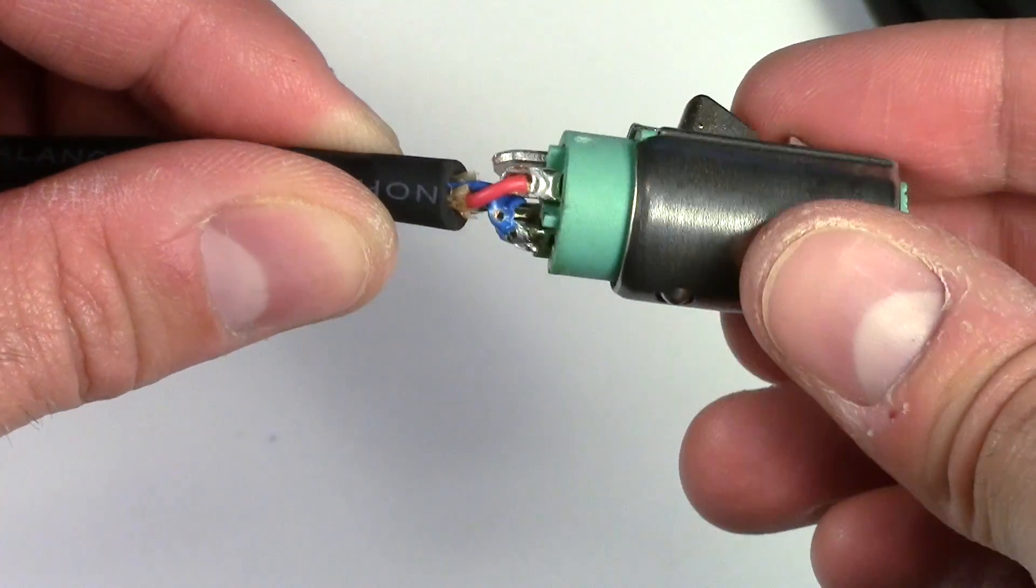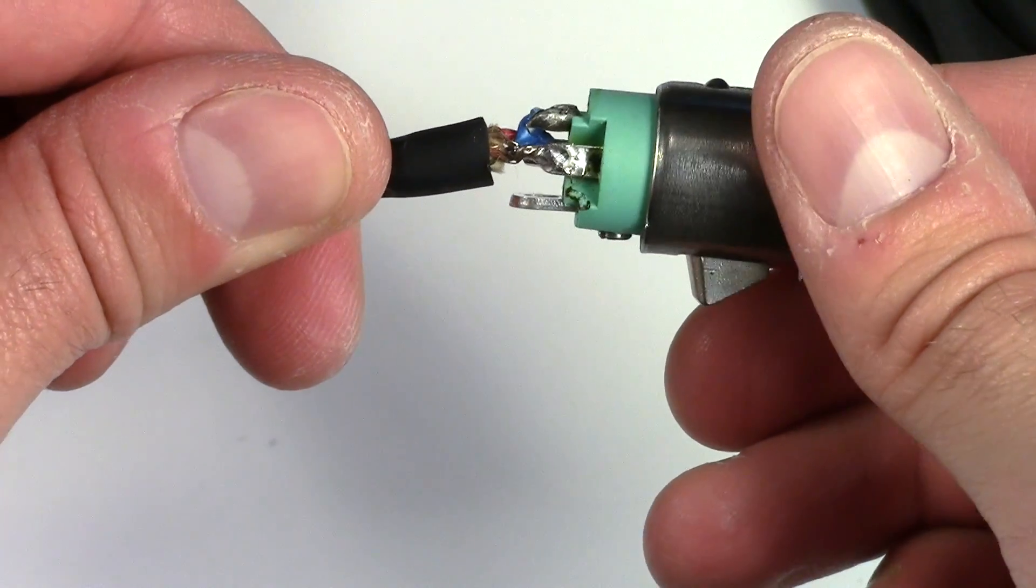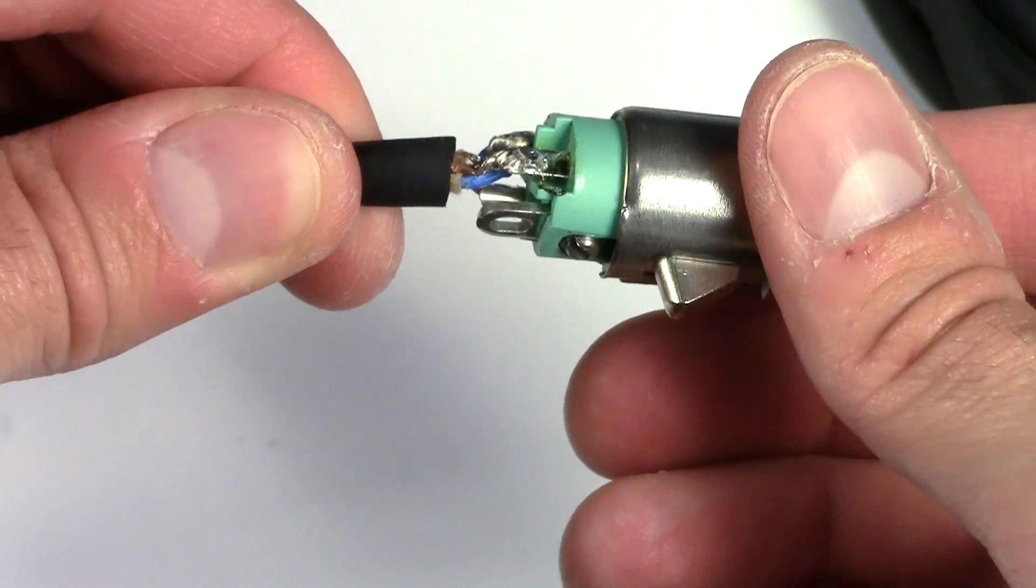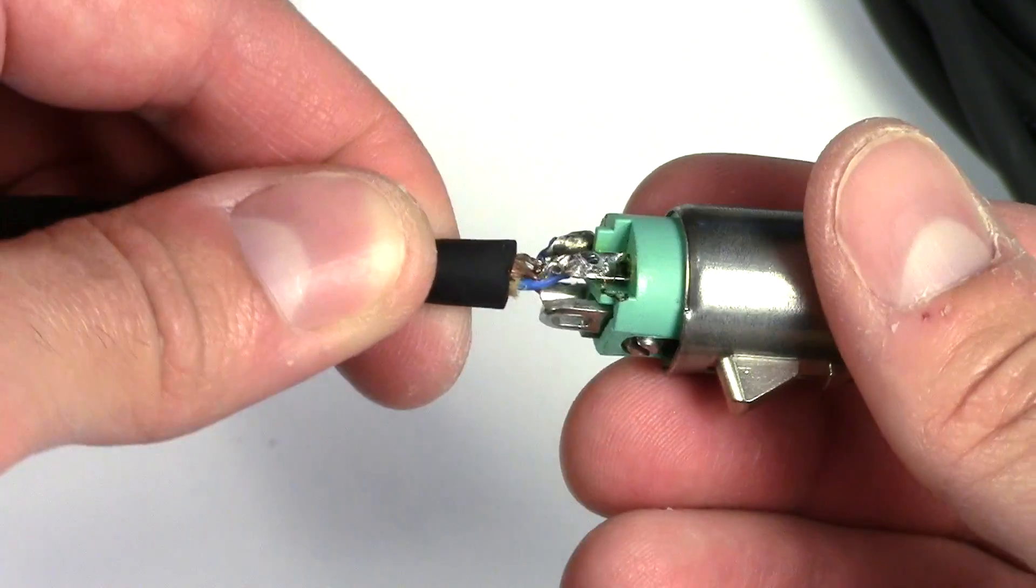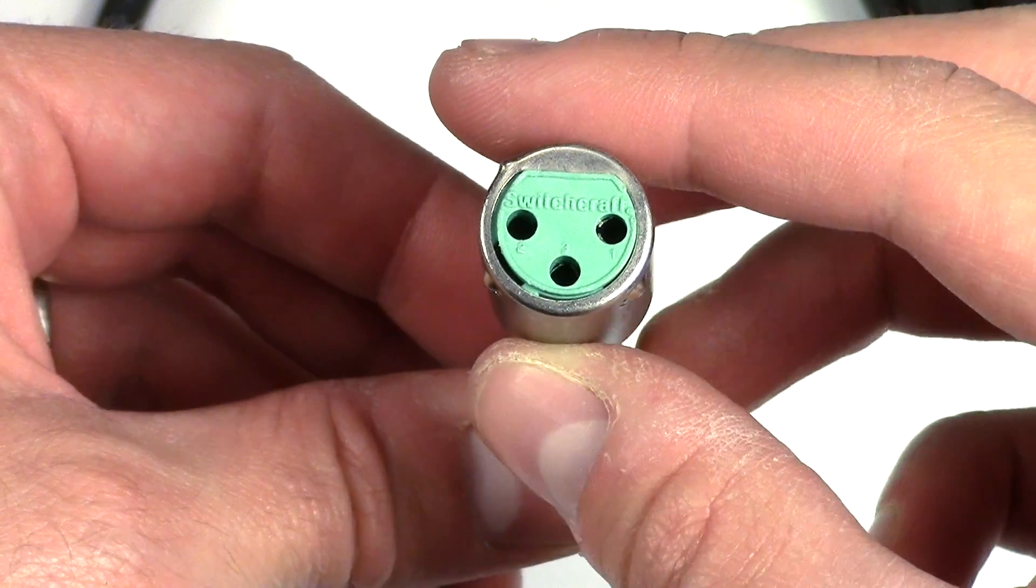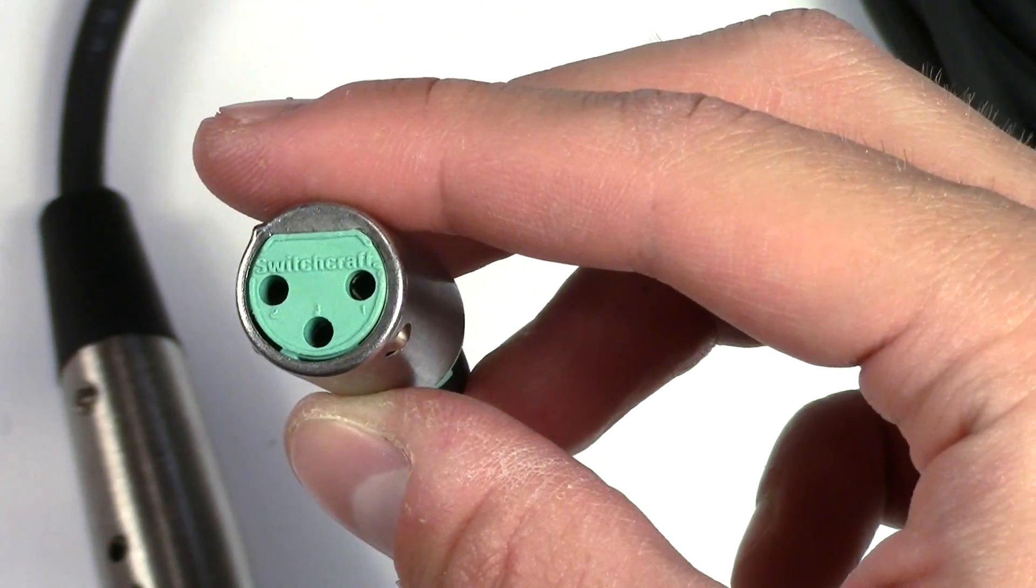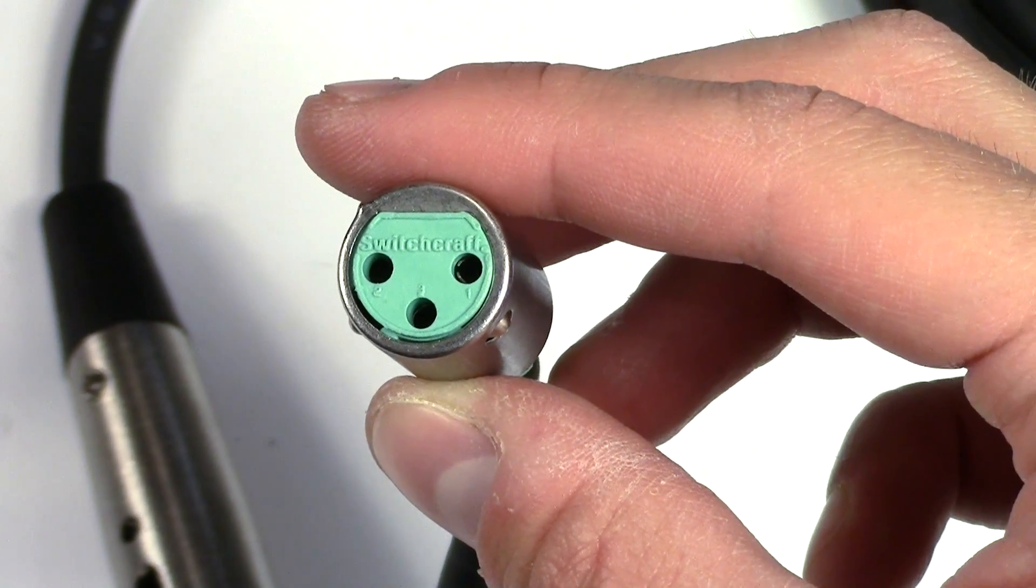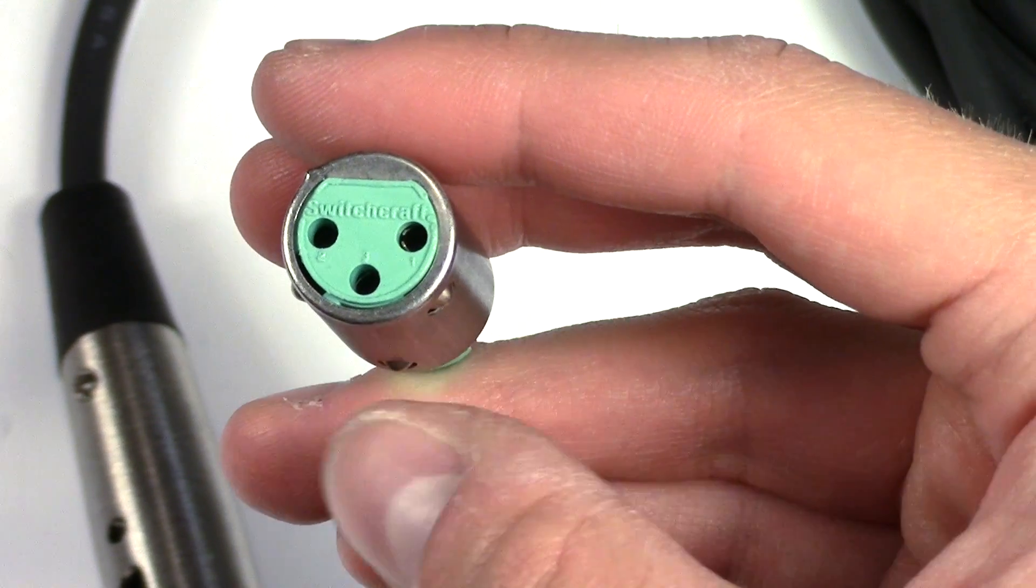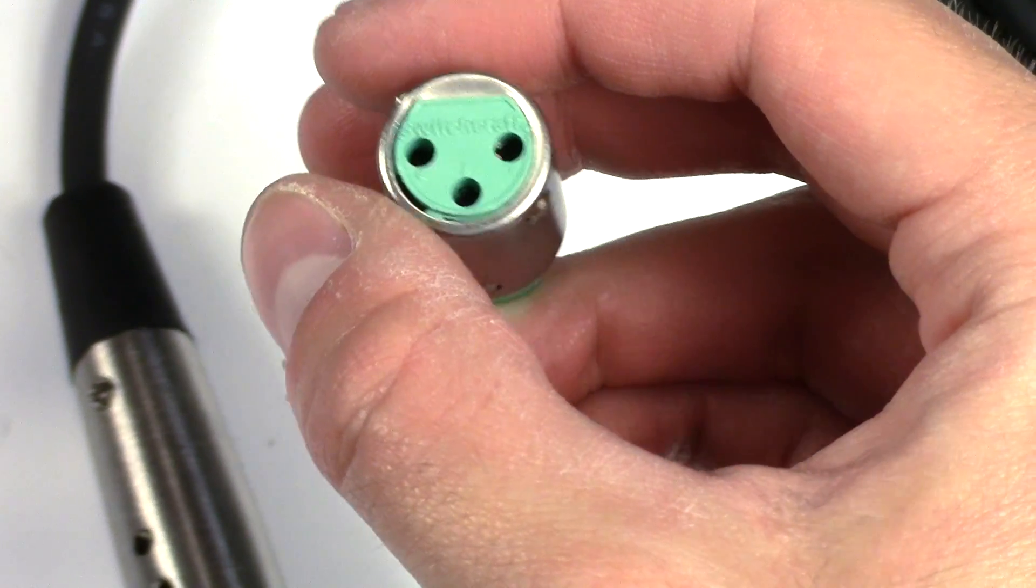So you'll notice on your solder connections you've got three terminals. You've got red, blue, and then what looks like the braid all twisted up going to a third terminal. On the very end here you'll see that they've labeled which pin is which. The one on the farthest right here is pin one. The one on the far left here is pin two.